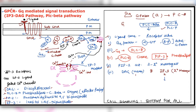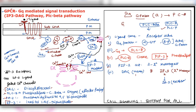IP3 will travel to the endoplasmic reticulum — the ER. On the ER there are IP3 receptors. IP3 receptor channels — these are IP3 ligand-gated channels. As we know, ligand-gated channels open only when a specific ligand comes. Since this is an IP3 receptor channel, it is IP3 ligand-gated. When IP3 arrives, the gate opens.